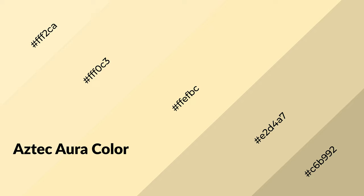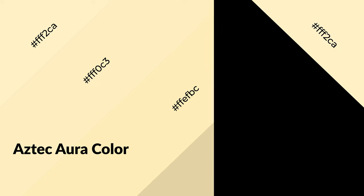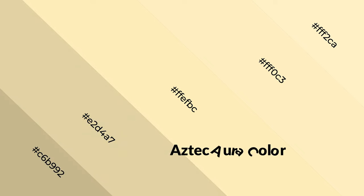Aztec Aura is a warm color and it emits cozier and active emotions. Warm colors are symbols of warmth, fire, heat, and sunshine. They also evoke joy, passion, love, and even anger. You can see them used in restaurants and gyms.